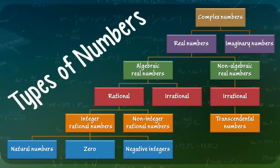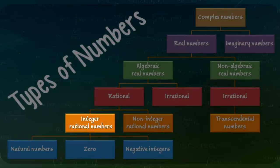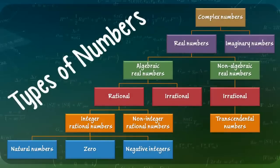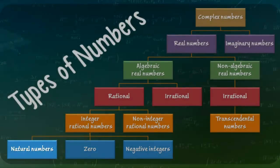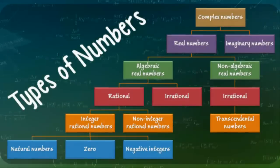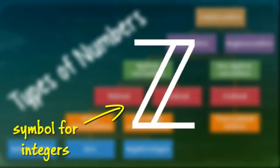All of the types of numbers that we have considered thus far can be classified as integers. An integer is simply a number that can be written without a fractional or decimal component. The complete set of integers, which includes the natural numbers, zero, and the negative integers, is often denoted using what is known as a blackboard bold letter Z.